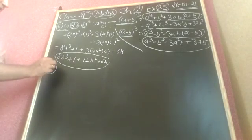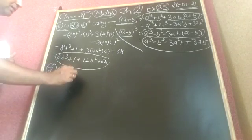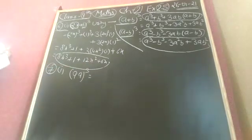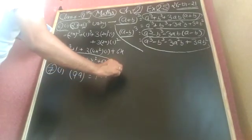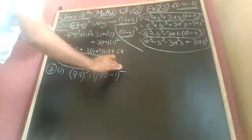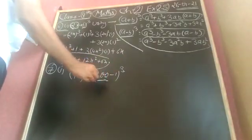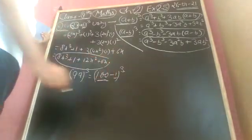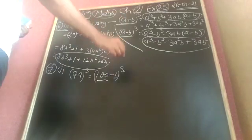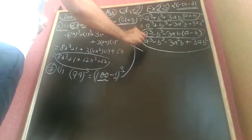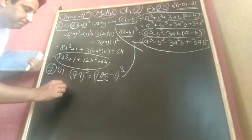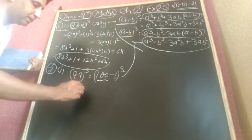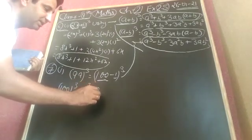Now in question number 7, first part, we have 99 cube. 99 is converted into 100 minus 1 whole cube. We have A as 100 and B as 1. Using the second identity, A minus B whole cube, we solve this.